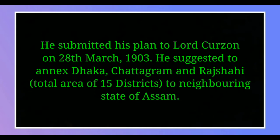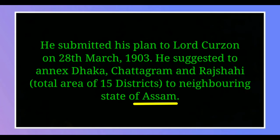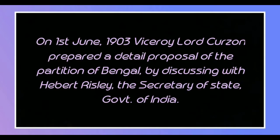Fraser submitted his plan to Lord Curzon on 28 March 1903. He suggested to annex Dhaka, Satragam, and Rajshahi — a total area of 15 districts — to the neighboring state of Assam. Annex means to join or to add. He made this plan and submitted it to Lord Curzon on 28 March 1903.